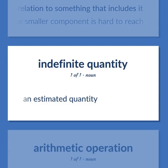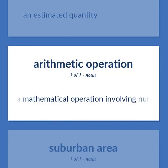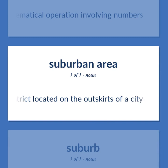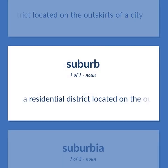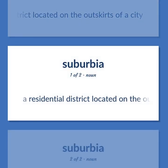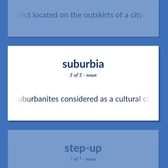An estimated quantity. A mathematical operation involving numbers. Suburb: A residential district located on the outskirts of a city. Suburbia: Suburbanites considered as a cultural class or subculture.